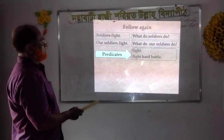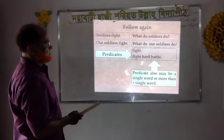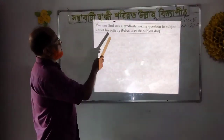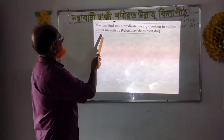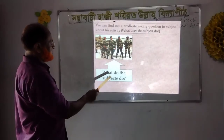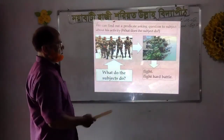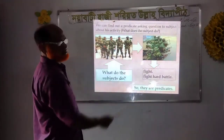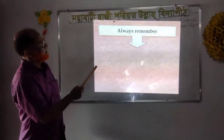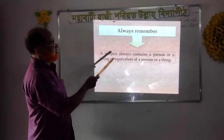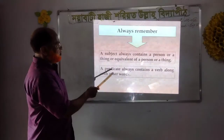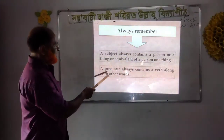What do soldiers do? They fight. What do our soldiers do? They fight hard battles. So 'fight' and 'fight hard battles' are predicates. Predicate also may be a single one or more than one. We can find out a predicate by asking about the subject's activity: 'What does the subject do?' Always remember: a subject always contains a person or a thing. A predicate always contains a verb along with other words.